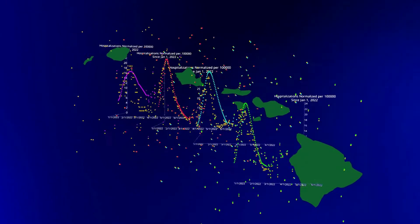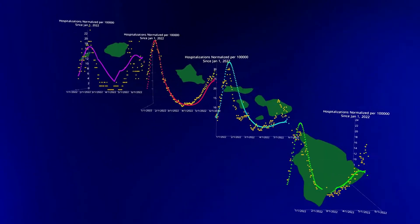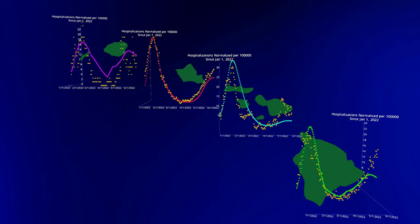This is a representation of the model fit of daily cases of hospitalizations for each county, normalized by 100,000. The orange dots represent data recorded by the Department of Health.